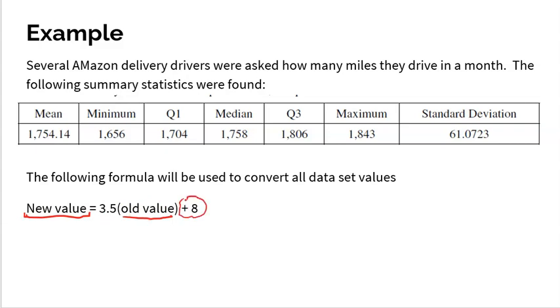Remember, the adding does not affect measures of spread. So what's the new mean going to be? Well, mean gets affected by multiplication. Multiplication affects everybody. And it gets affected by addition and subtraction. So the new mean would be 3.5 times the old mean, 1754.14, plus eight. So do that little math there. 3.5 times 1754.14. I'm grabbing my calculator right now. So we get 6147.49. Maybe this corresponds to converting the miles they drive to how much money we owe them. But again, mean, min would do the same thing. Q1, median, Q3, max, they would all get the same treatment because all those values are affected both by multiplication and addition.